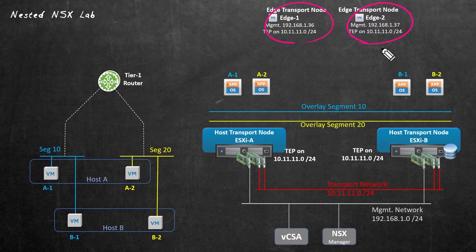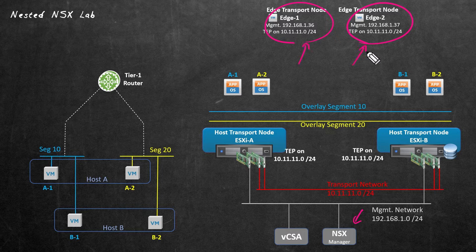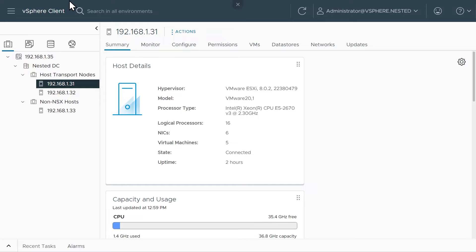There are a couple of ways we can look at the edge nodes. One is we could use the NSX Manager and take a look at the edge nodes there. Secondly, we could SSH into each of those to take a look at them at the command line interface as well. Let's do both of those right now.